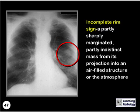What is the name given to this sign? This is the incomplete rim sign, a partly sharply marginated, partly indistinct mass from its projection into an air-filled structure, such as the lung, or the atmosphere. In this case, this was a large mole on the patient's skin.